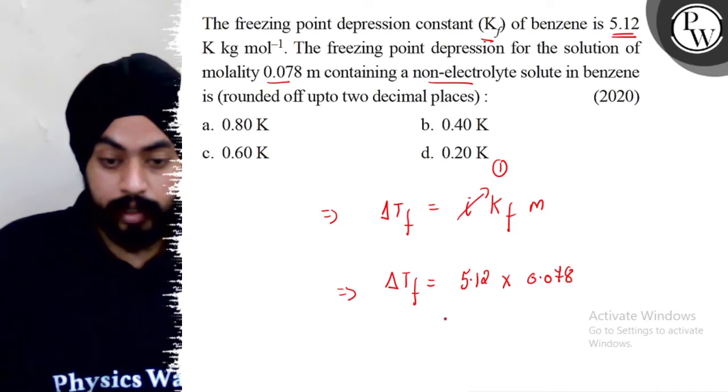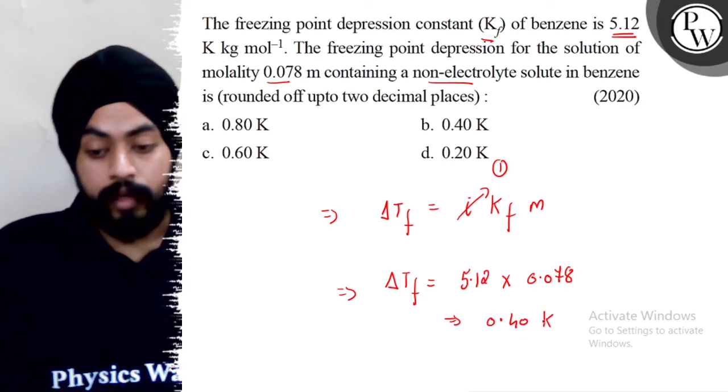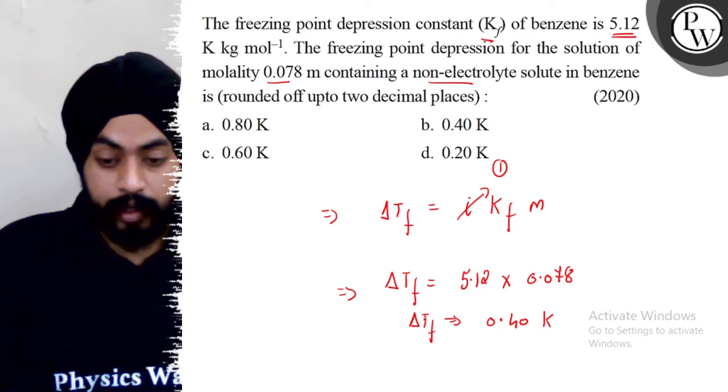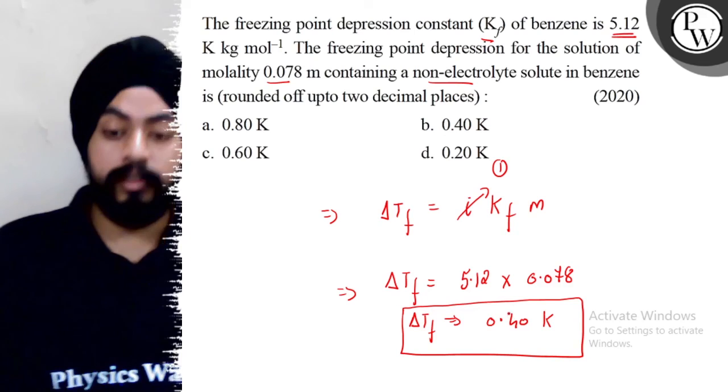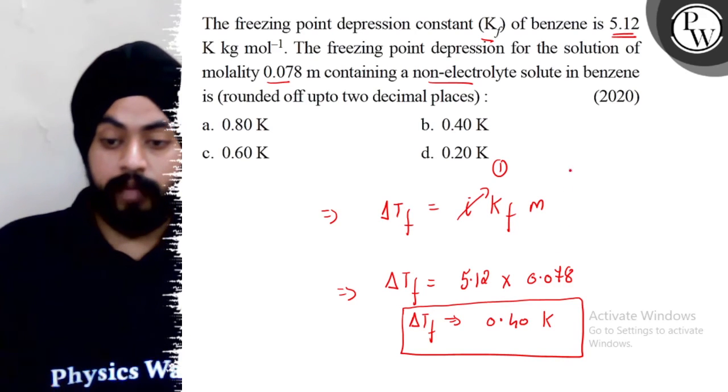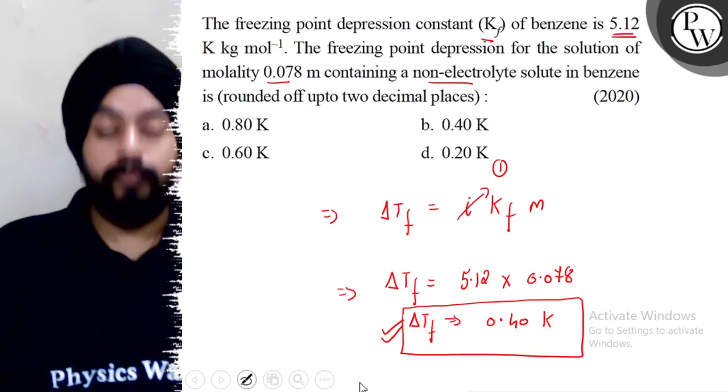This is rounded to two decimal places, and the freezing point depression for the solution will be 0.40 Kelvin.